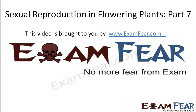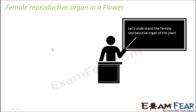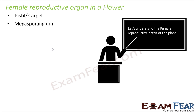Hello friends. This video on sexual reproduction in flowering plants part 7 is brought to you by examfear.com — no more fear from exam. Let us now understand the female reproductive organ of the plant, because we already saw how male gametes are produced. Now it's time to see how the female gametes are produced and where they are produced. We will talk about the carpel or pistil, megasporangium, and the embryo sac which is the female gametophyte.